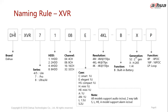The naming rule for XVR: you see 'XVR' followed by different series numbers — four, five, seven, and eight. The higher the value, the higher the cost and the more features in terms of AI and other capabilities. It's good to master this because you may be required to identify how many channels a given XVR model has.